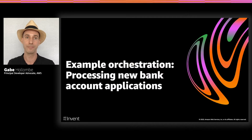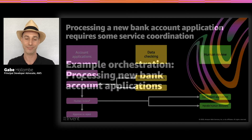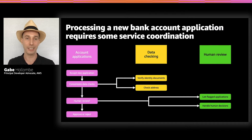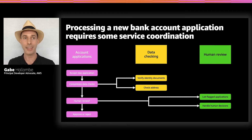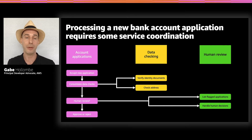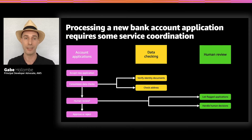Let me show you this in more detail using an example service orchestration — processing bank account applications. Here's an overly simplified example of how we might process an application to open a new bank account. We'll have an account application service that takes something from initial interest all the way through an approve or reject decision. That service collaborates with a data checking service to do automated checks on identity documents and addresses. In cases where automated checks don't turn out okay, we flag it for human review, a human makes a decision, and we end up with an approve or reject decision.